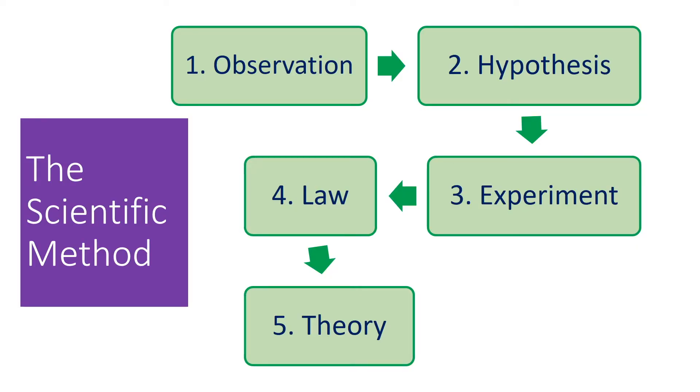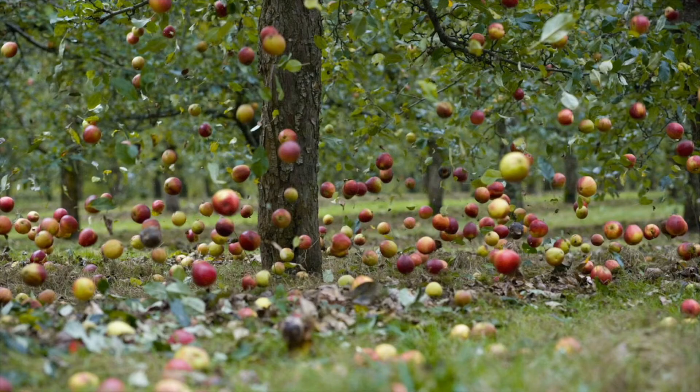If you go back to the experiment, the experiment represents particular instances. So if you run the experiment a hundred times, a thousand times, ten thousand, ten million times — theoretically at least — these are all particular instances. From these particulars, you then develop a law which applies to the general. Going back to Newton and gravity, the general would be that all physical objects in the universe apply a force of attraction on other objects.